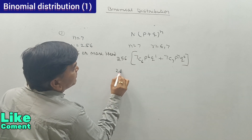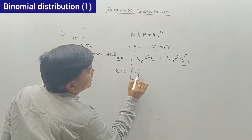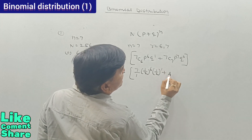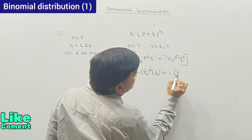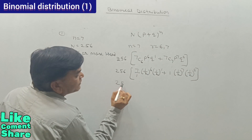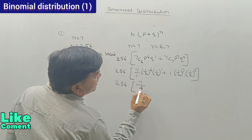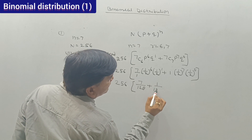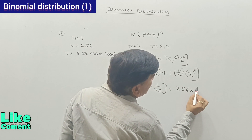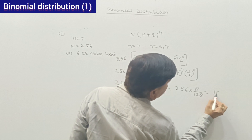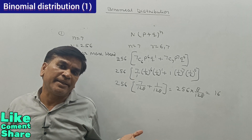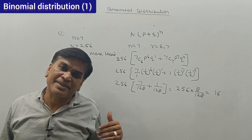So 256 × [7 × (1/2)^6 × (1/2)^1 + 1 × (1/2)^7 × (1/2)^0] = 256 × [7/128 + 1/128] = 256 × 8/128 = 16. The expected frequency of getting 6 or more heads is 16 times.